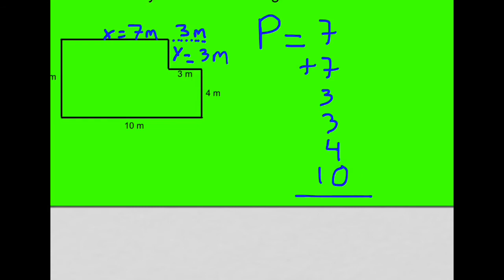Okay, 7, 7 is 14. 3 and 3 is 6 makes 20, plus 10 is 30, plus 4 is 34. So that means the distance around this garden is 34. And it's really important we put meters. Units of measurement matter. So we're going to say P equals 34 meters. The perimeter around that garden is 34 meters.